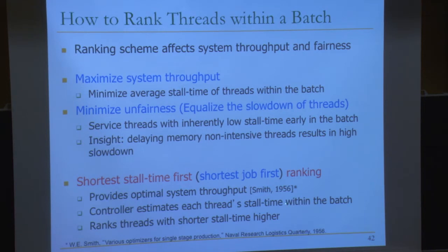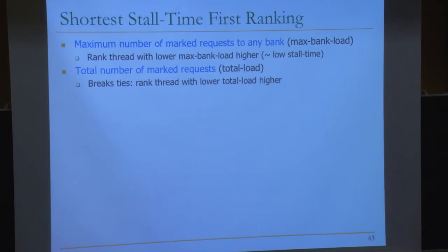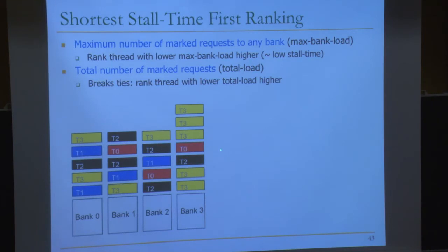Concretely, the memory controller computes two values per thread: max bank load — the maximum number of marked requests to any bank — and total load — the total number of marked requests. Threads with lower max bank load are ranked higher. As a tiebreaker, threads with lower total load are ranked higher. These proxy for lower memory intensity and lower stall time.